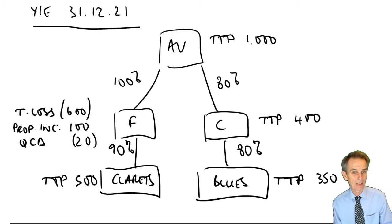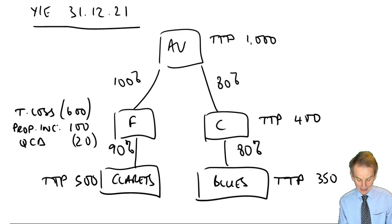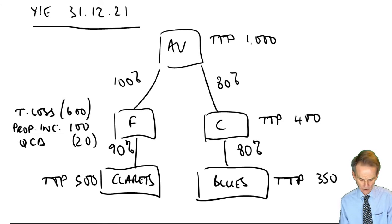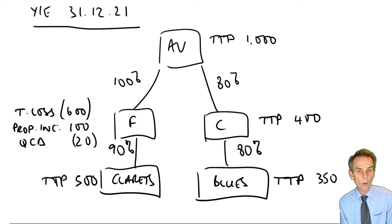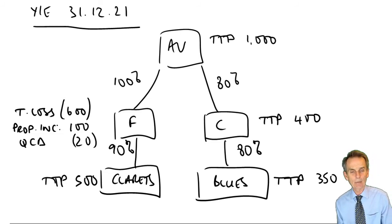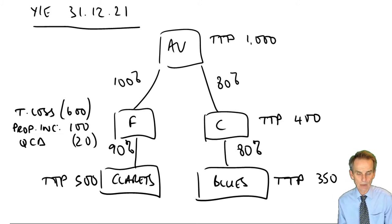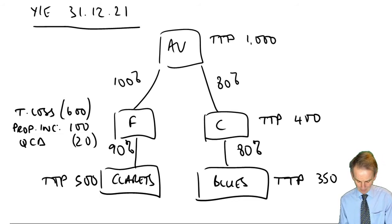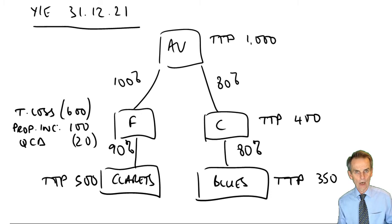I've set up a familiar situation in terms of the group of companies. We have the AV group of companies and, as when we started with this in our first lecture on this chapter, AV has two direct subsidiaries. It has 100% — a wholly owned subsidiary — company F, and an 80% shareholding in company C. Company F then owns 90% of its own subsidiary Clarets, and C owns 80% of Blues. So we know what the shareholding structure is: parent company, direct and indirect subs.